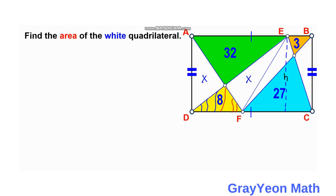Next we focus on triangles EBF and EBC. As you can see, they also have an overlap — this 3 square unit orange triangle. These two triangles have the same area because they share the same base EB and the same height H, with side FC for EBF and side BC for EBC. Therefore we call these portions Y and Y.